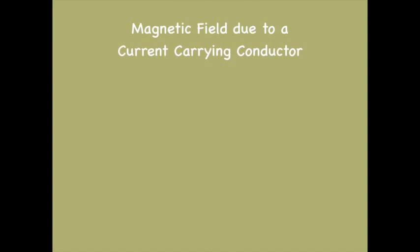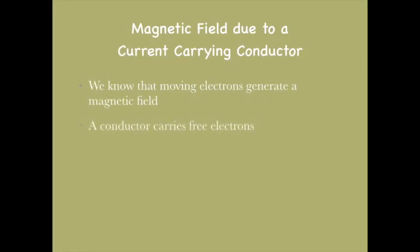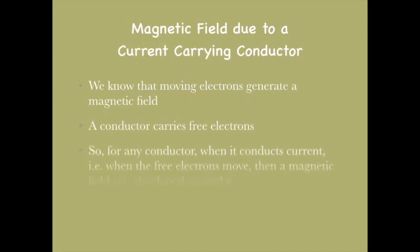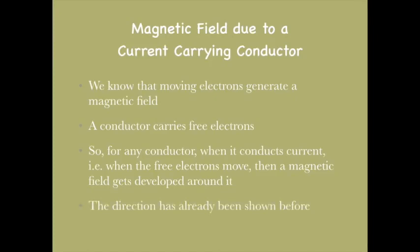Now let's study about the magnetic field due to a current carrying conductor. We know that any moving electron will generate a magnetic field, and a conductor carries free electrons. So for any conductor when it conducts a current — that is, when the free electrons move — a magnetic field gets developed around it, and this direction has already been shown before.